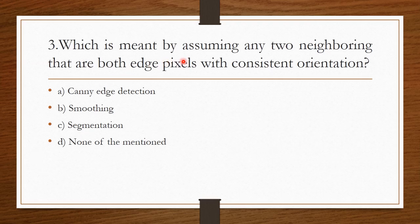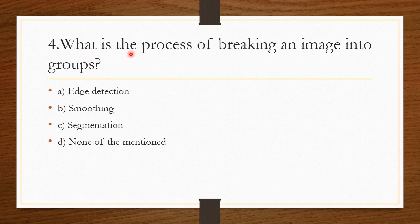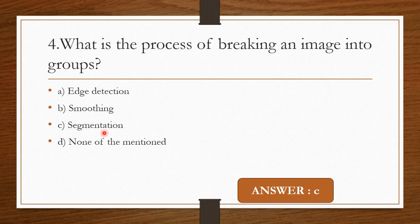Question 3: What is meant by assuming any two neighboring pixels that are both edge pixels with consistent orientation? Option A: Canny edge detection. Option B: Smoothing. Option C: Segmentation. Option D: None of the above. The correct answer is Option C — Segmentation, which is the process of breaking an image into groups.